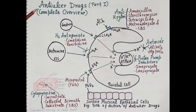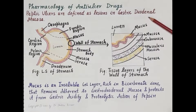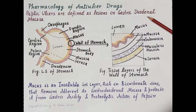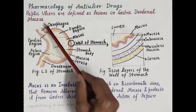In order to understand the mechanism of action and the role of a drug in the management of peptic ulcer disease, let's first recapitulate what is peptic ulcer disease and its pathogenesis. Peptic ulcers are defined as lesions in the gastroduodenal mucosa. Here, mucosa refers to the innermost lining of the wall of the stomach or duodenum. This diagram shows the gross structure of the stomach.